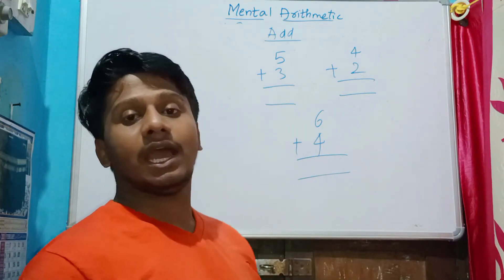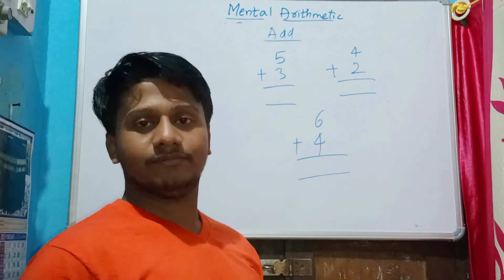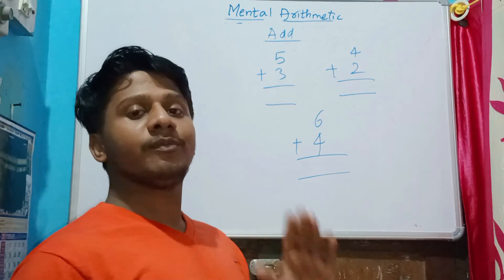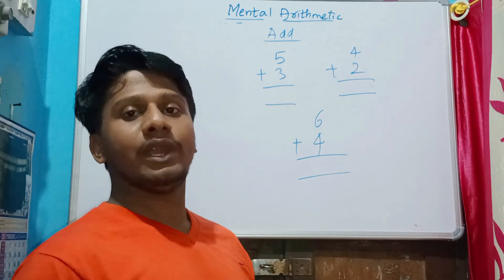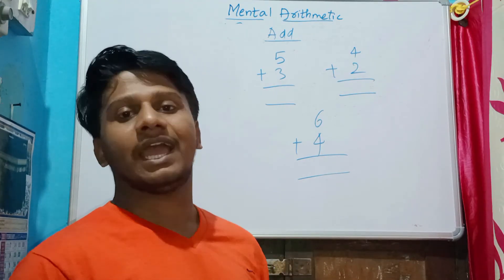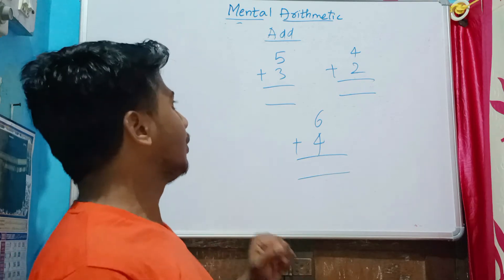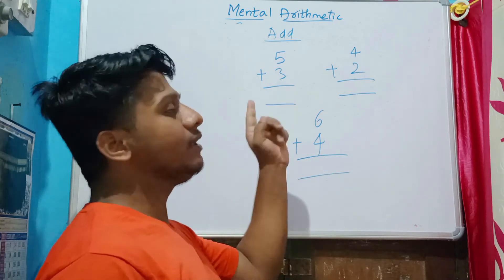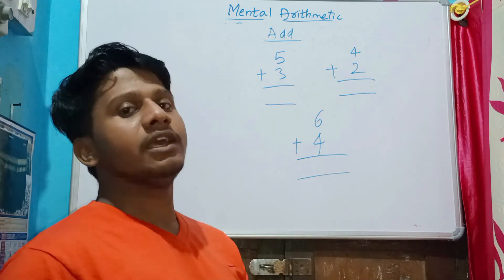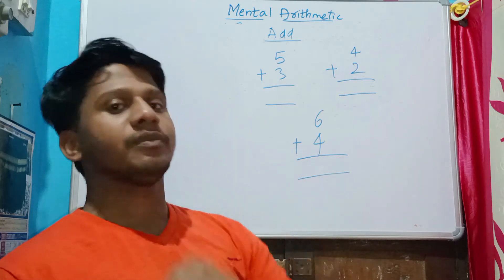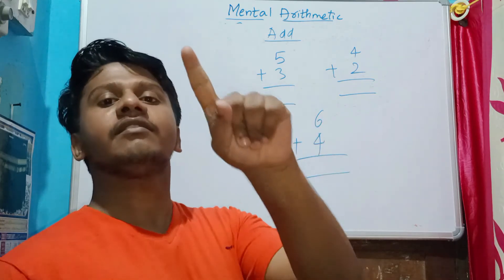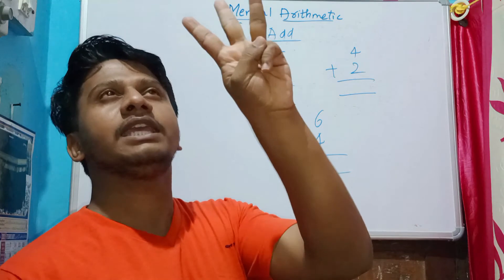The next type of problem is addition. We are going to use our mind to do addition — we already did it with fingers and lines. So five plus three: after five, how many numbers should I take? Three numbers — after five: six, seven, eight. The answer is eight.